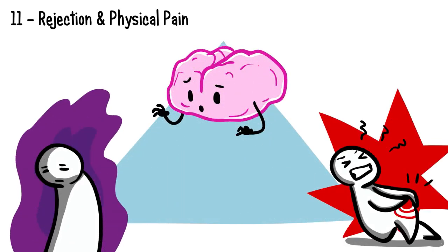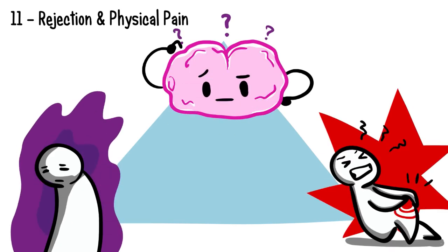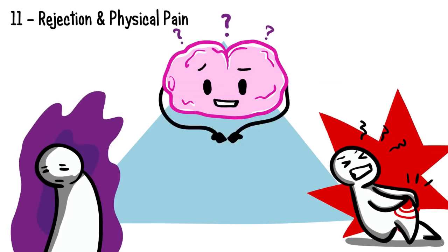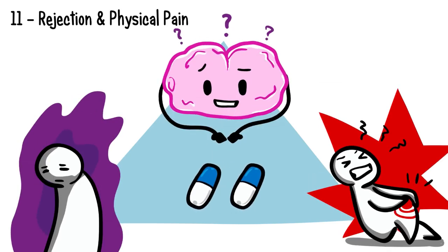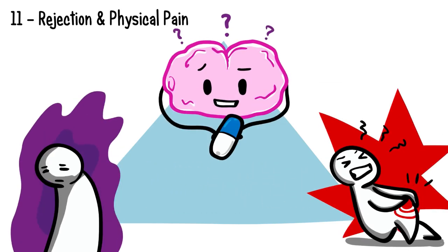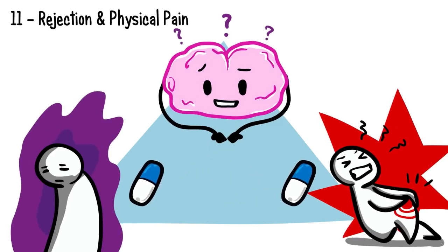Fact number 11. Rejection and physical pain. Have you ever wondered why the brain can't differentiate rejection from physical pain? Although the brain processes physical pain and emotional pain differently, it can't discriminate between the two. This is because the brain releases the same natural pain-killing chemical when a person is shunned or physically hurt, therefore confusing the brain.